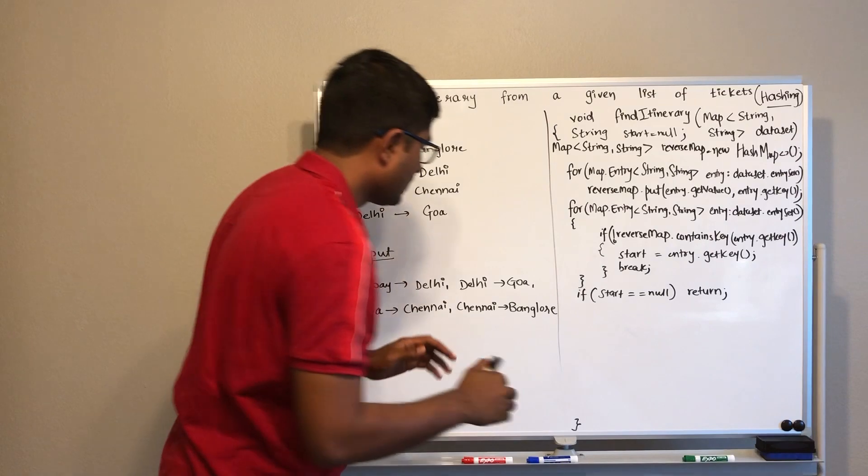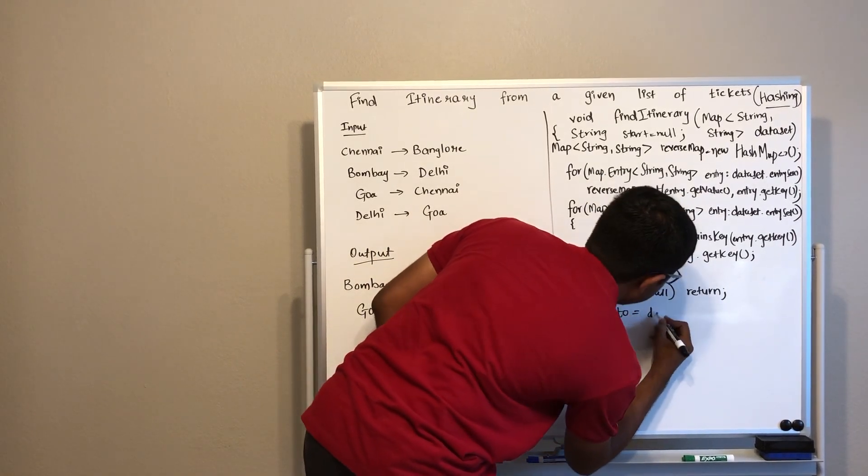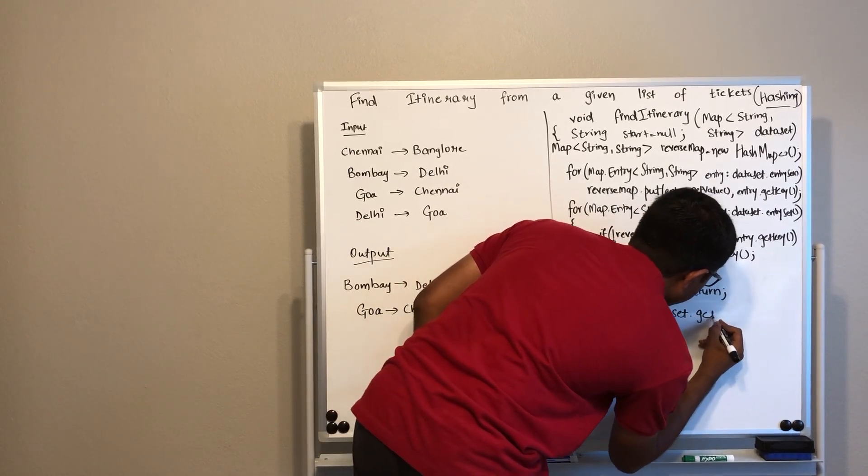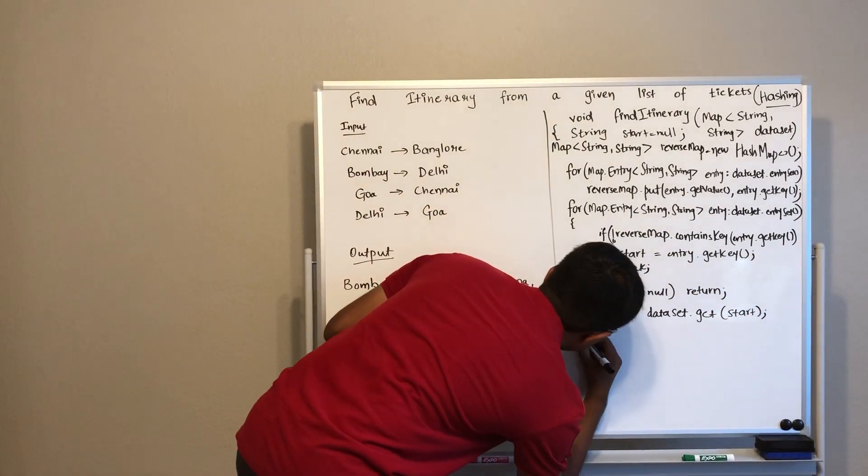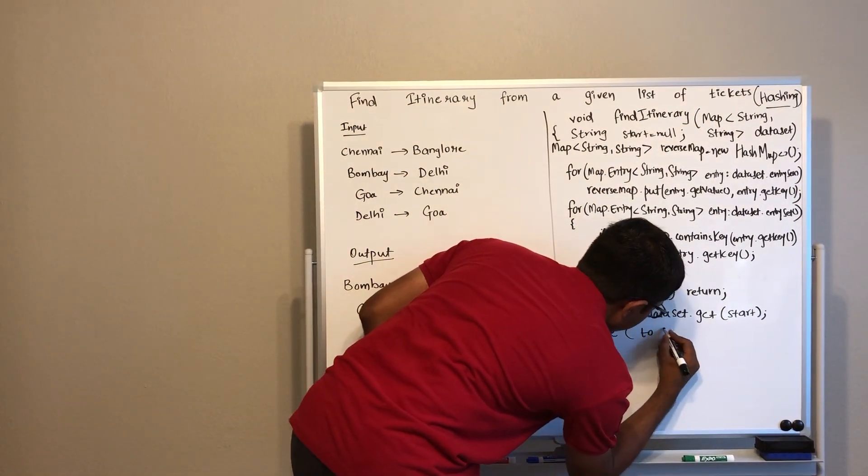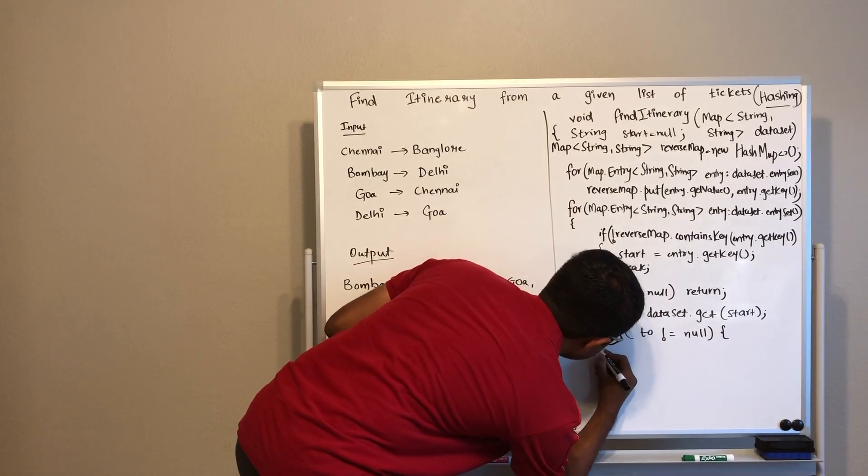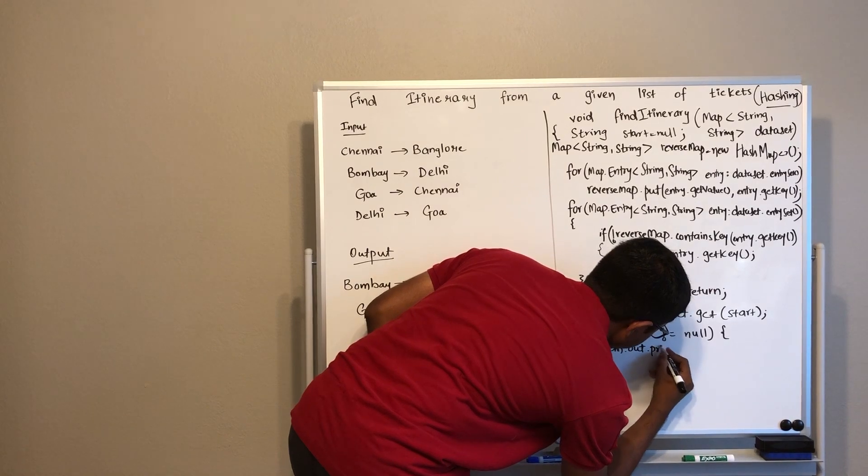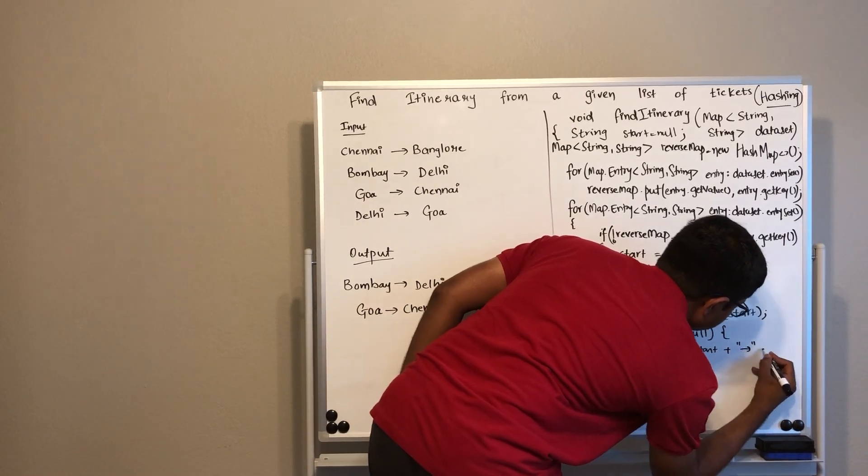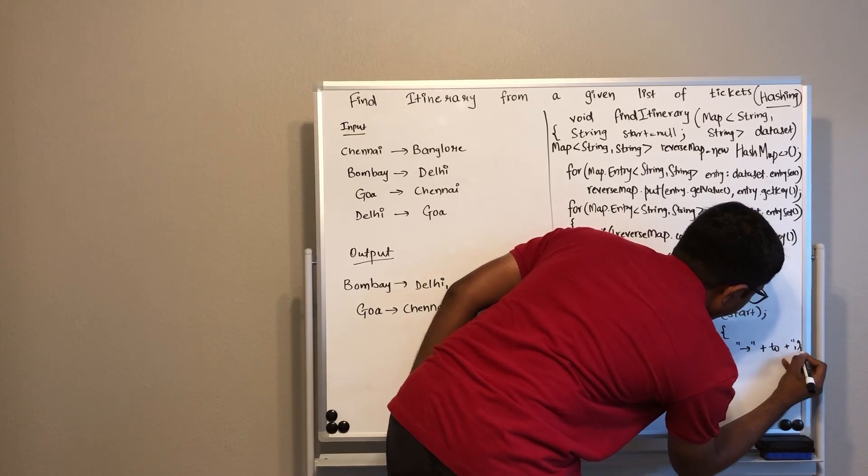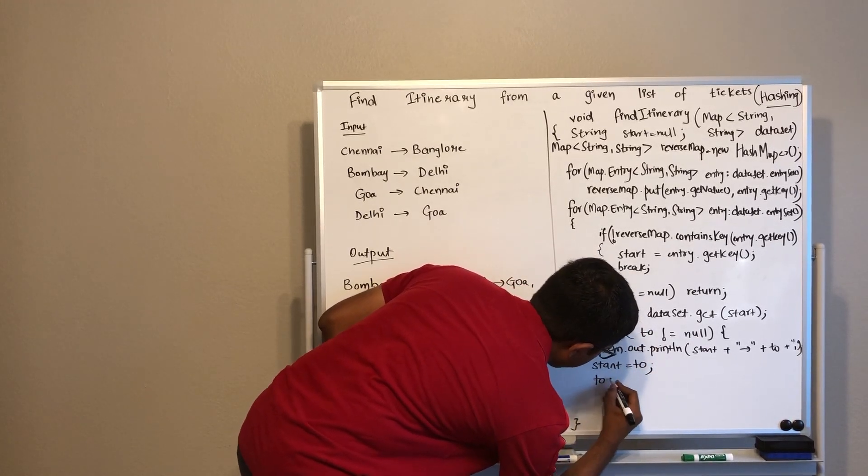We will first find to, which is dataset.get(start), that means in this case Delhi. When to is not equal to null, we will print this. Start to to. And now the start will become to, and to will be again derived from the dataset.